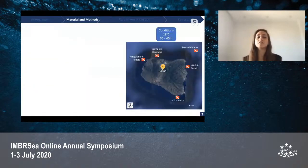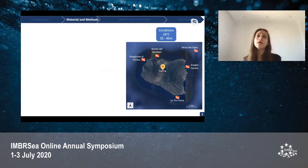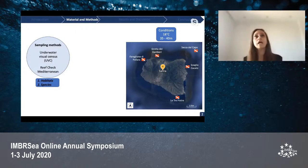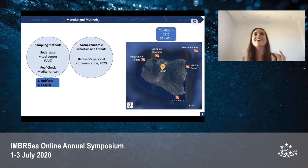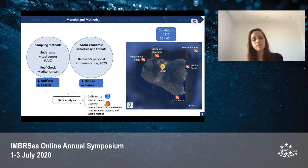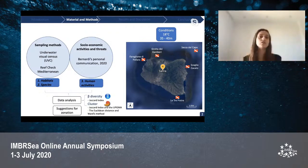Five dive sites around Salina Island with similar conditions for temperature and depth range were assessed by four divers in September last year. The sampling methods were based on underwater visual census and the Reef Check protocol for the Mediterranean Sea, which provides information about habitats and species including fishes, as well as expert assistance and personal communication from my supervisor. A third aspect regarding human activities and impact was also included. Data analyses were carried out for beta diversity in R software and hierarchical clusters in PAST software, and from the results, ideas and suggestions were given for the zonation proposal. Results are presented following the numbering sequence of habitats, species, and human activities.